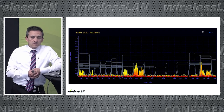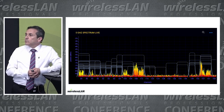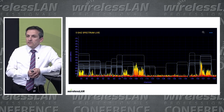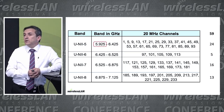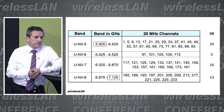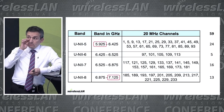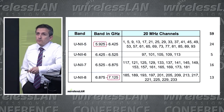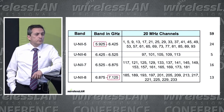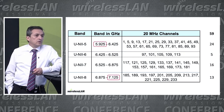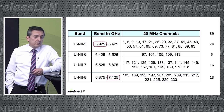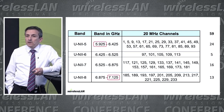We ran out of spectrum. 2.4 and 5GHz got congested. We begged and asked for more frequency, and we got it. In the U.S., we got 1.2GHz — 59 channels. And more questions started coming up, like: whose brilliant idea was it to start again with channel 1? Because now we have two channel 1s: channel 1 in 2.4 and channel 1 in 6GHz. And we have some overlaps in 5GHz as well — channel 161 and channel 165.